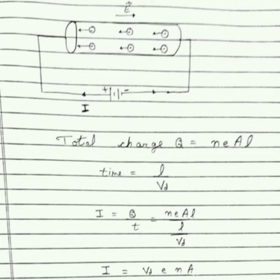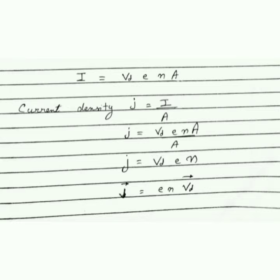Here the l cancels out, and the current relation will be equal to nAevd. This is the simple derivation we used to find current — current formula was charge upon time, charge was nAl and time was l upon vd, giving us the current formula I = nAevd.